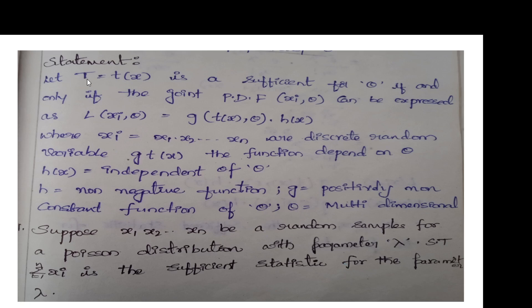The main statement is: let capital T equal to small t of X be sufficient for theta if and only if the joint PDF F of Xi, theta can be expressed as L of Xi, theta equal to G of T of X, theta into H of X. Here, capital T equal to small t of X is the sufficient statistic for the parameter theta.